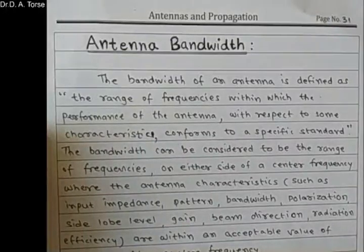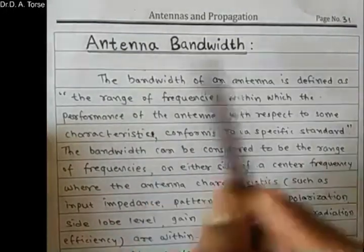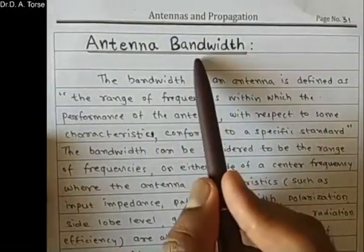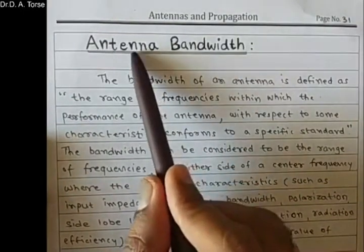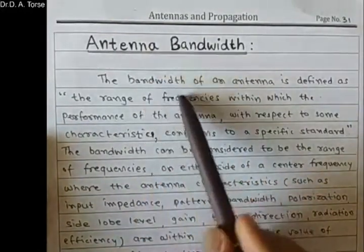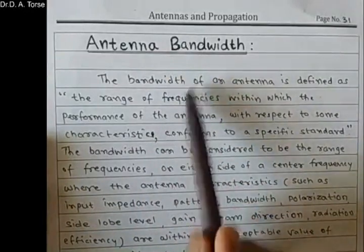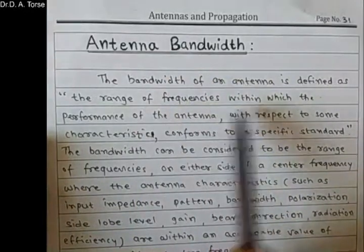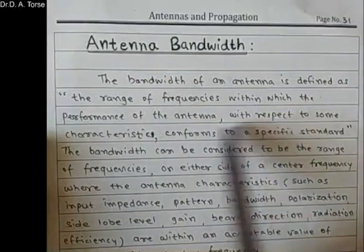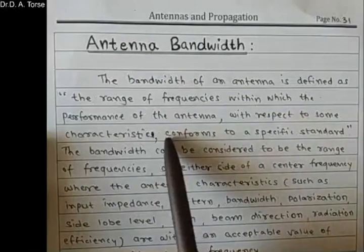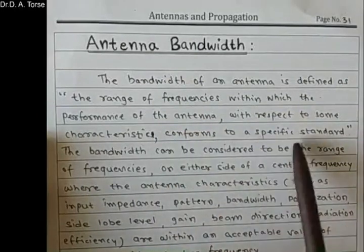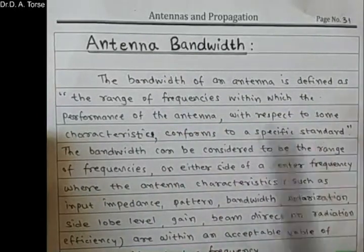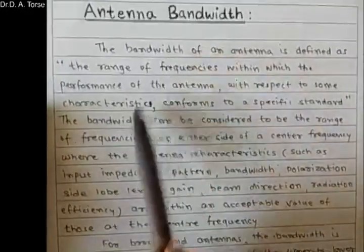Hello and good morning. Topic number 7 is antenna bandwidth. The bandwidth is a range of frequencies — a very similar definition as in general, but the range of frequencies within which the performance of an antenna with respect to some characteristics complies to a specific standard is called the bandwidth of an antenna.